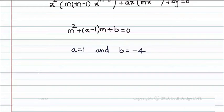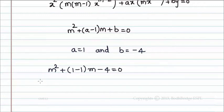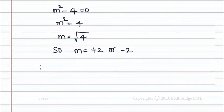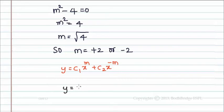Substituting a = 1 and b = −4 into m² + (a−1)m + b = 0 gives m² + (1−1)m − 4 = 0, that is m² − 4 = 0. So m² = 4, which implies m = ±2. Since the roots are distinct, the complete solution is y = c₁ x^m + c₂ x^(−m), giving y = c₁ x² + c₂ x^(−2).